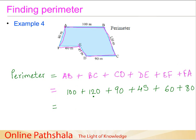Adding them up: 100 plus 120 is 220, plus 60 is 280, plus 80 is 360, plus 90 is 450, plus 45 gives us 495 meters. So the perimeter of this figure is 495 meters.